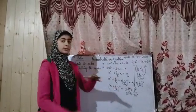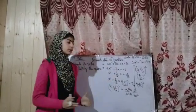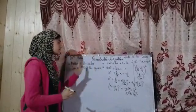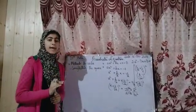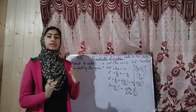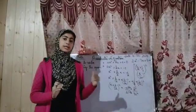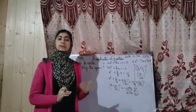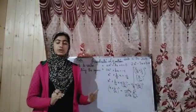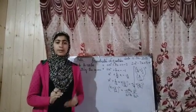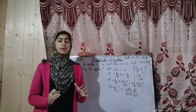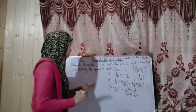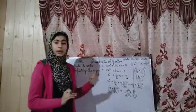You have already got an introduction to quadratic equations, and today we will discuss the methods to solve a quadratic equation. There are three main methods: one is factorization, second is completing the square, and third is the quadratic formula. You are already aware of the factorization method, so today we will study the completing the square method.